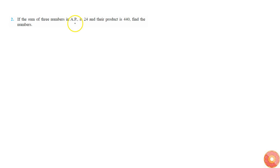Given that the sum of three numbers in an AP is 24 and the product is 440, and we are asked to find the numbers. So let's just say a, b, c, or otherwise I will call them as a minus d, a, a plus d.